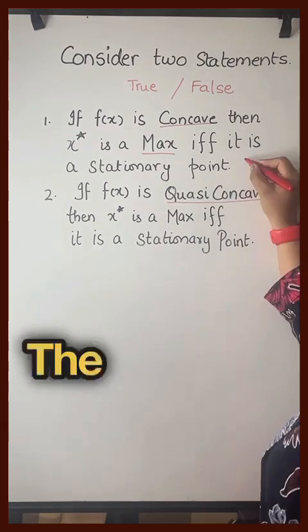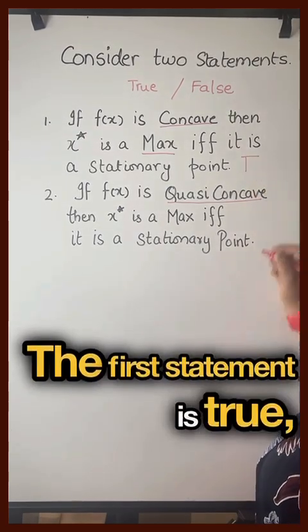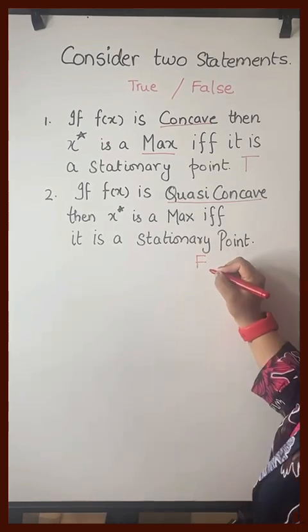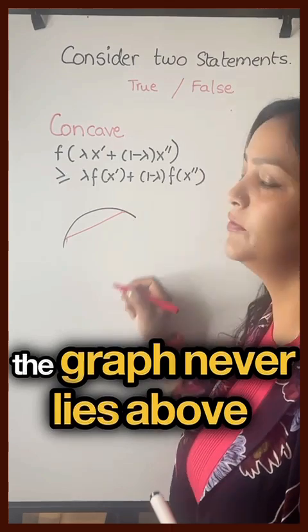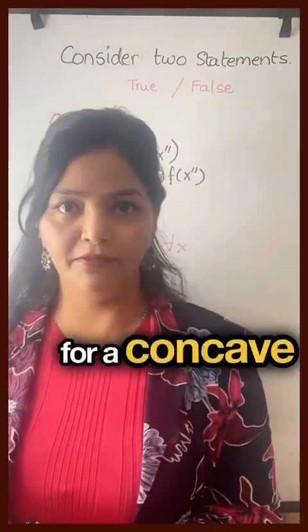The first statement is true, but the second statement is false. For any concave function, the line joining two points on the graph never lies above the graph.